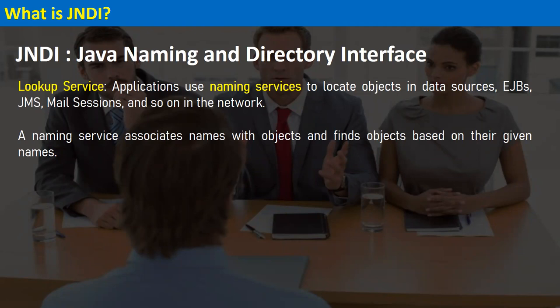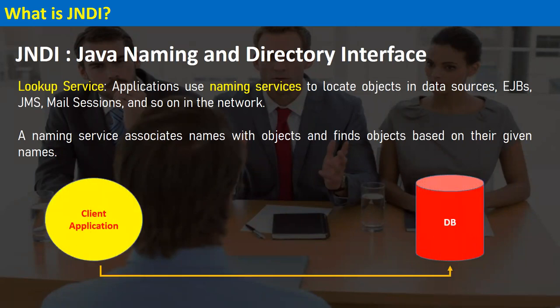When any application needs a connection from the database, or needs to connect with JMS to receive or put some message in a queue, it first connects with JNDI, and then JNDI connects it with the backend resource. For example, a client application needs a connection from the database.